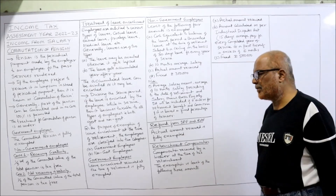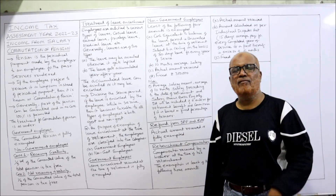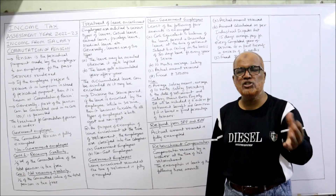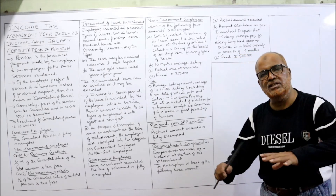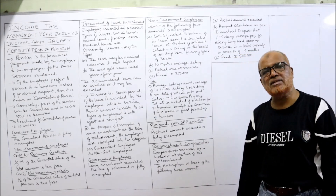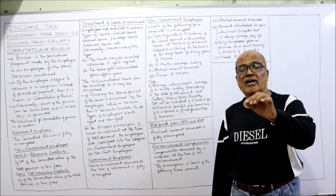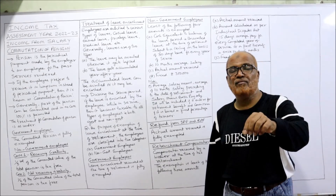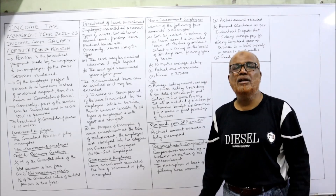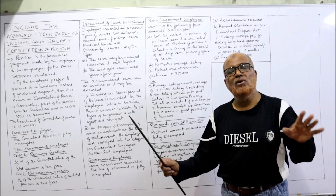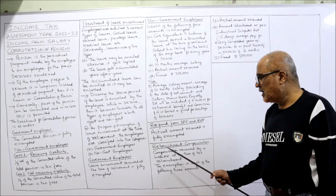Next: refund from SPF and RPF — Statutory Provident Fund and Recognized Provident Fund. In coming videos I will explain the different types of provident fund in detail. For now, remember that refund from SPF and RPF at the time of retirement is fully exempted from tax for both government as well as non-government employees.